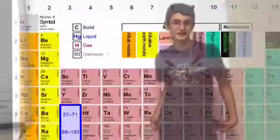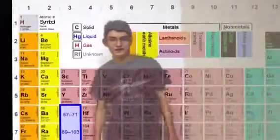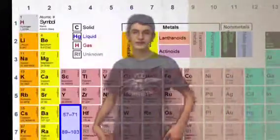Elements on your periodic table are organized into groups, otherwise known as columns, and periods, otherwise known as rows.